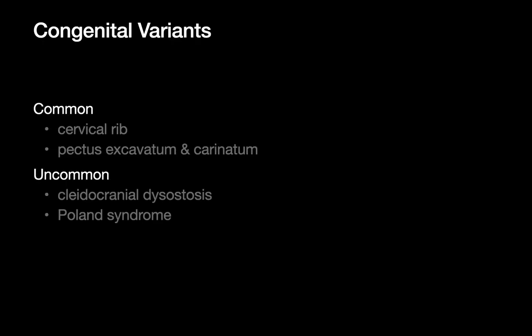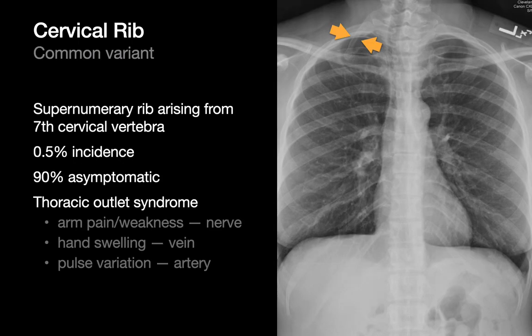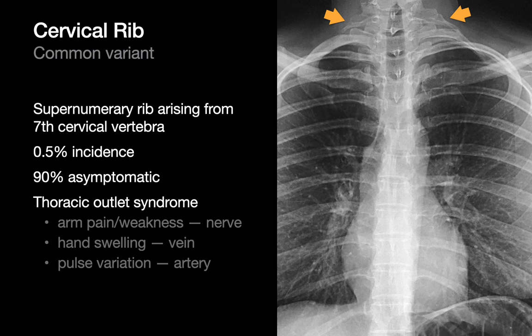The common congenital chest wall variants you need to be familiar with are cervical ribs and the two pectus chest wall deformities. Two rare congenital variants to know are cleidocranial dysostosis and Poland syndrome. Cervical ribs are extra ribs, either bilateral or unilateral, coming off of the C7 vertebra.